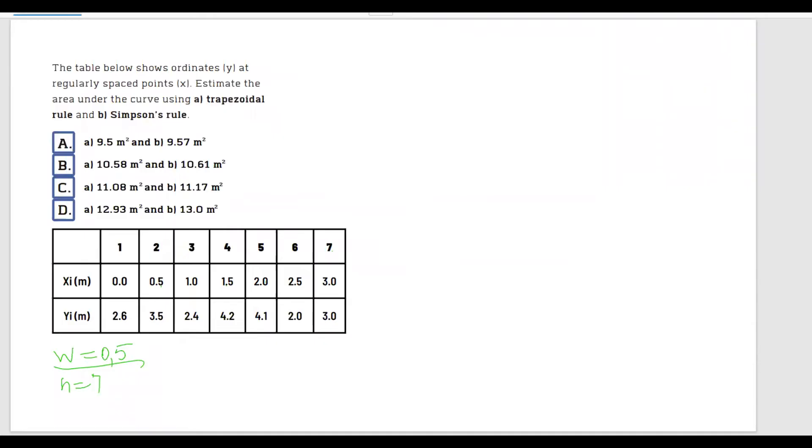Now let's go ahead and solve this by writing down the formula for trapezoidal rule, which is w multiplied by h1 plus hn over 2 plus h2 plus h3 plus hn minus 1.